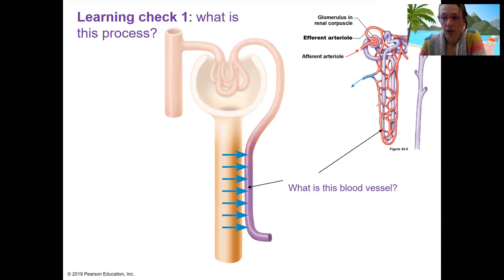these capillaries that surround the nephrons. This is the paratubular capillaries. If you answered vasorecta, that's fine. Both of those capillary beds are going to be important in different types of nephrons as we start talking about reabsorption in more detail this week.